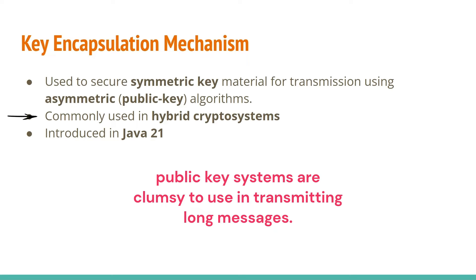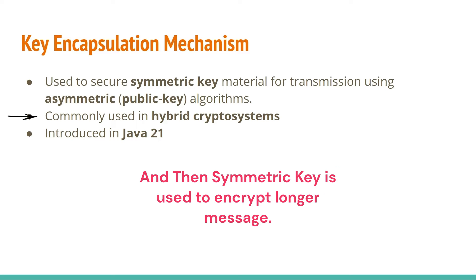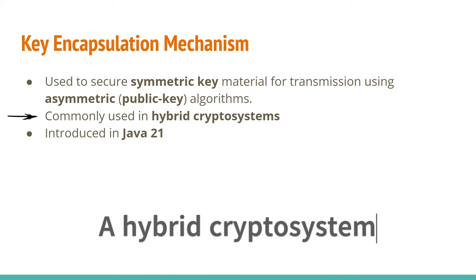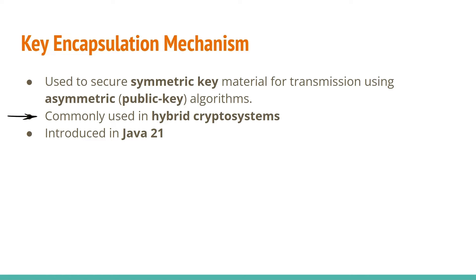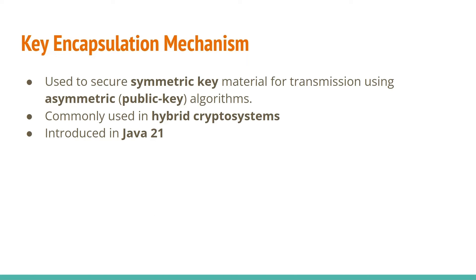In practice, public key systems are clumsy to use in transmitting long messages. Instead, they are often used to exchange symmetric keys, which are relatively short. The symmetric key is then used to encrypt the longer message. A hybrid cryptosystem is a cryptographic approach that combines the strengths of both symmetric and asymmetric encryption to secure data communication or storage. It addresses key management challenges and performance issues associated with public key cryptography, while still benefiting from its secure key exchange and digital signature capabilities.